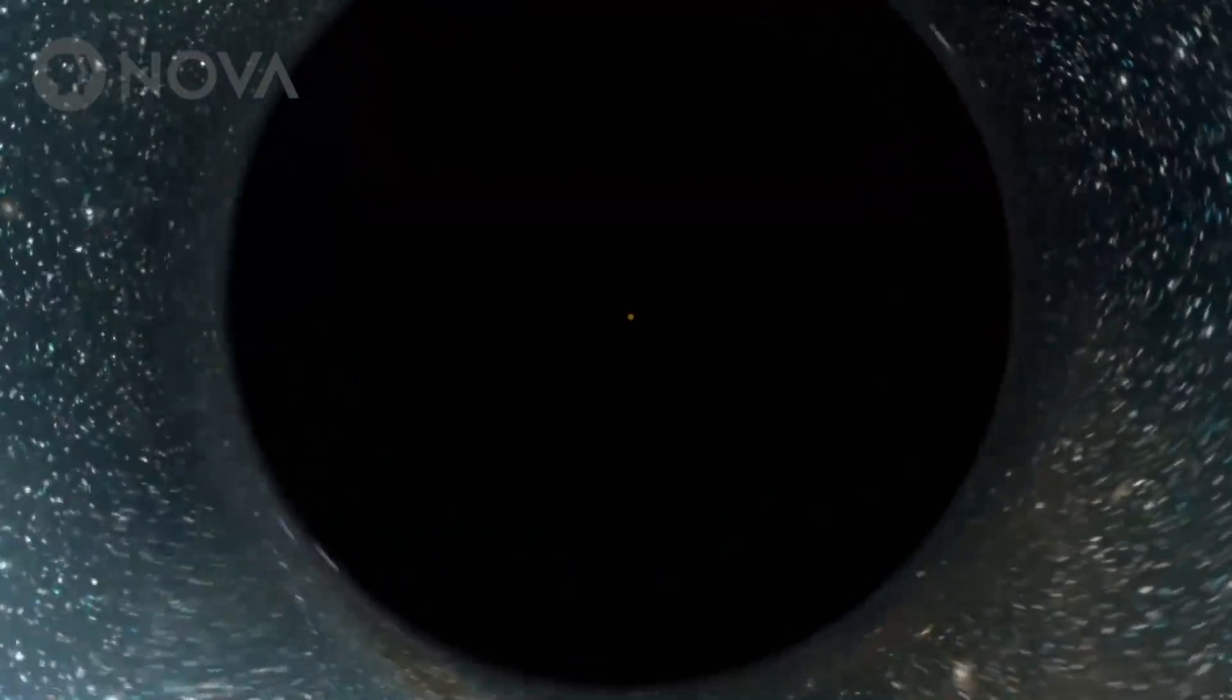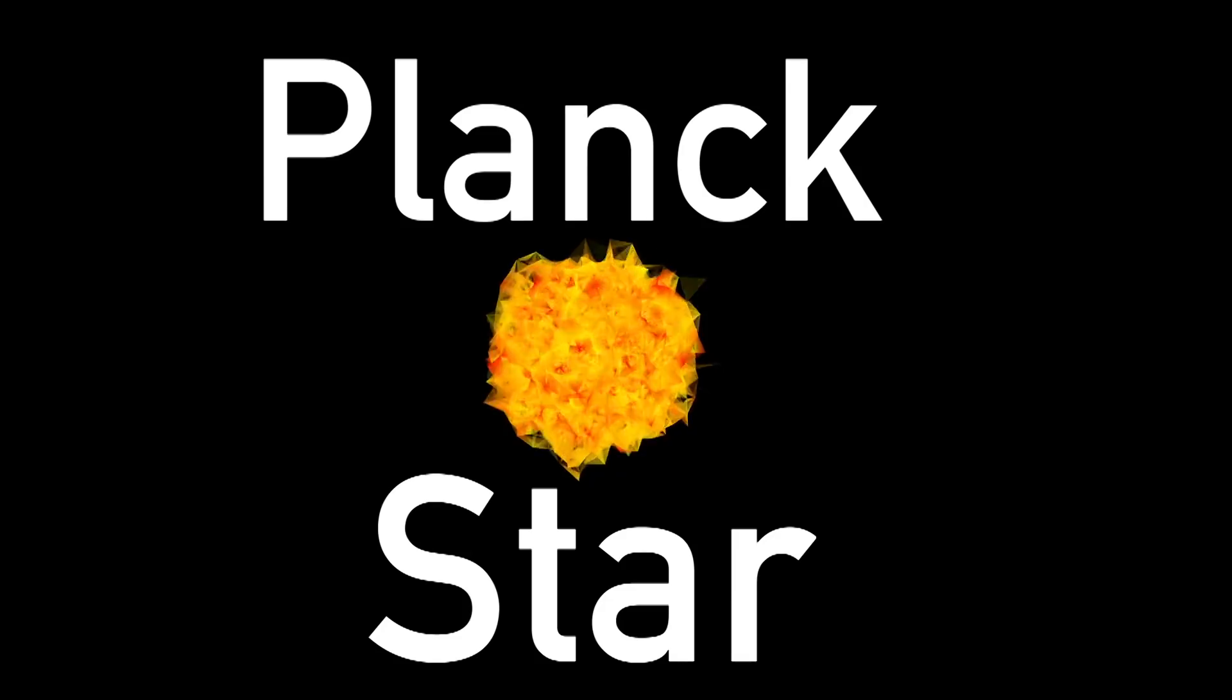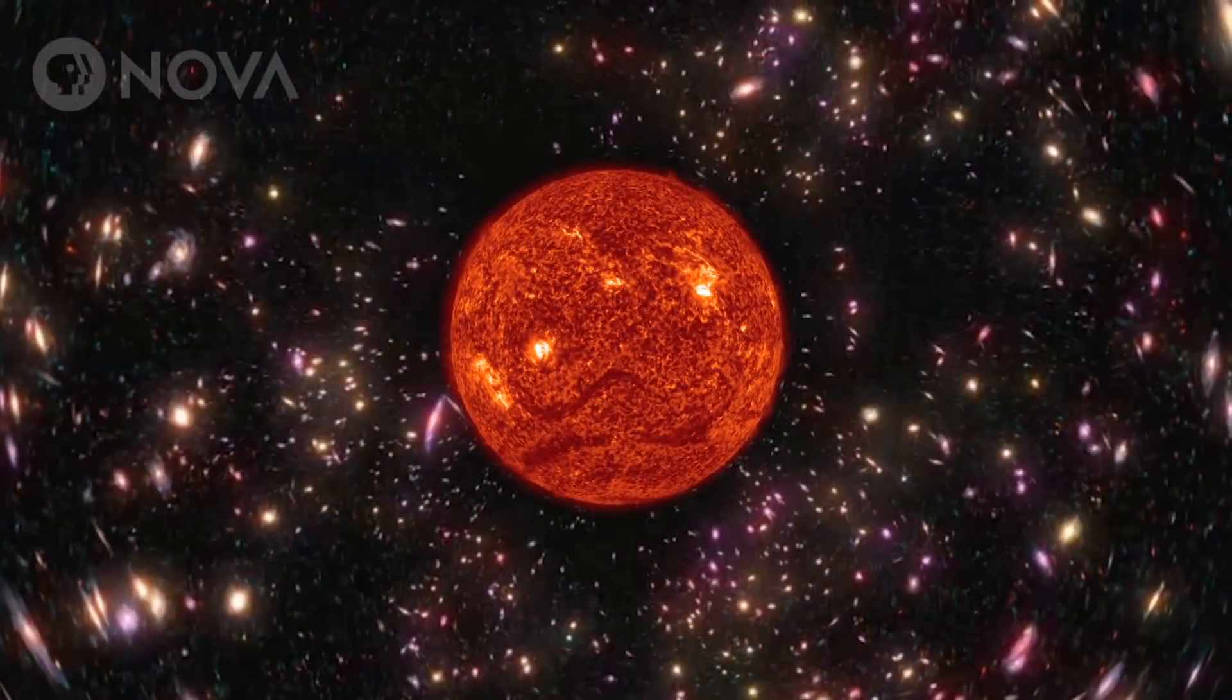So the matter inside the black hole would be crushed into a very, very tiny star called a Planck star that sits at the center of the black hole. For a black hole, the mass of our sun...